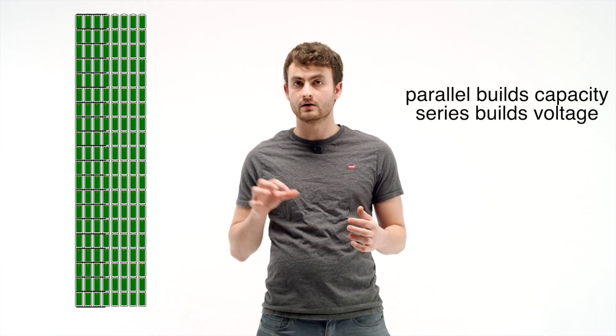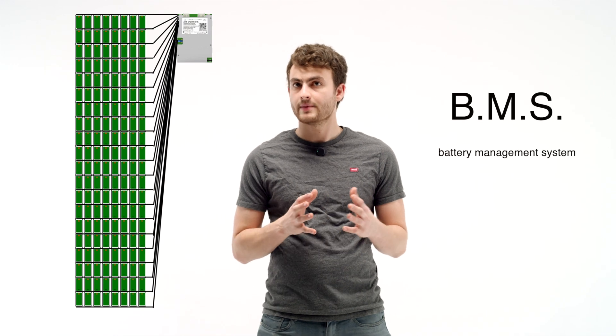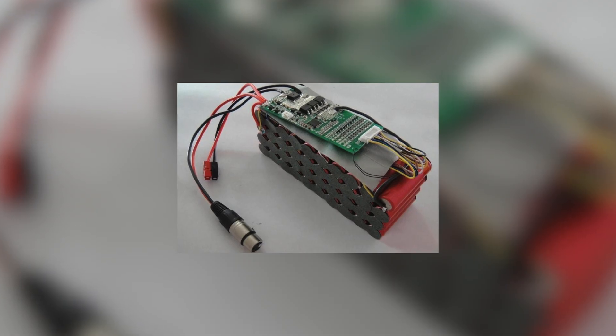Connecting to every single parallel group in this battery is one main circuit board called a BMS. This battery management system is something that's hidden within the case here. It makes sure every group of cells has the same voltage.